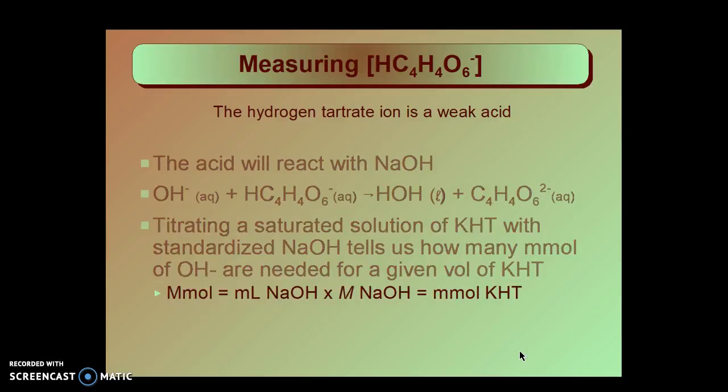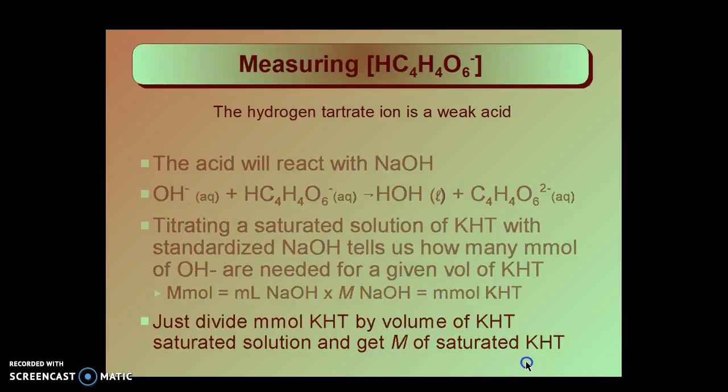We do this by multiplying the milliliters of sodium hydroxide by the molarity or millimoles per milliliter. And the millimoles of sodium hydroxide at the equivalence point will be the millimoles of KHT that is dissolved in the water at that temperature. Then we just divide the millimoles of KHT by the volume of KHT saturated solution that we've titrated. That will give us the molarity of the saturated potassium hydrogen tartrate solution.